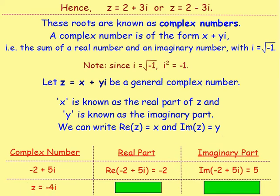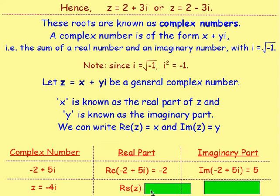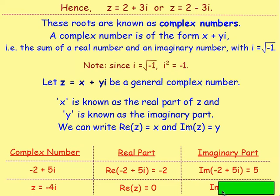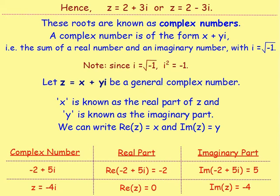For Z = −4i: Re(Z) = 0, since there is no real part. Im(Z) = −4, which is just how many i's you would have. Moving on to equal complex numbers.